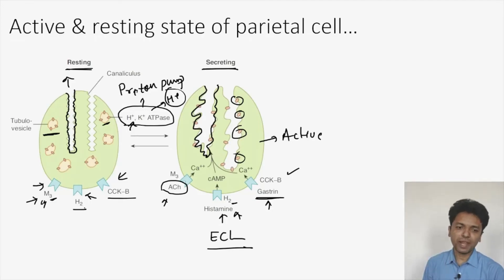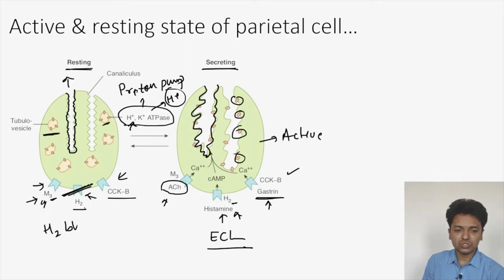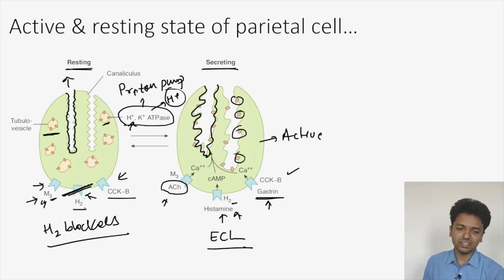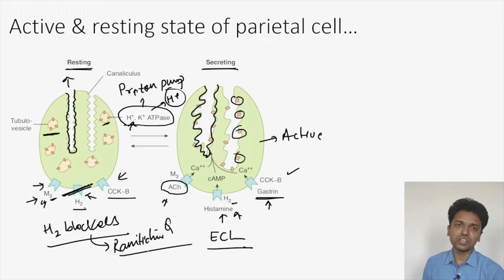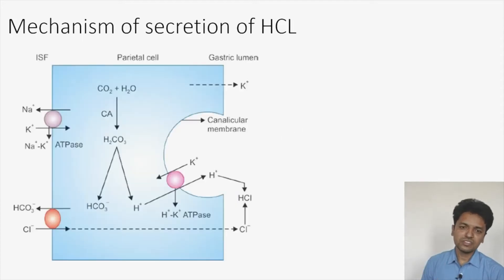An important applied aspect: there are drugs which can block the H2 receptor, called H2 blockers, and when the H2 receptor is blocked, acid secretion is reduced. A very good example of an H2 blocker is ranitidine. These drugs can be used in hyperacidity and peptic ulcer disease.